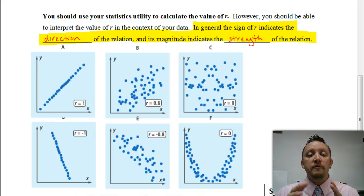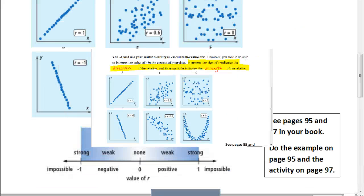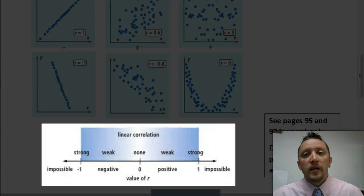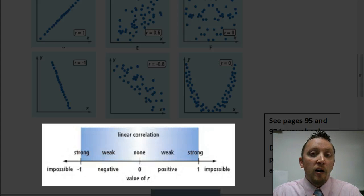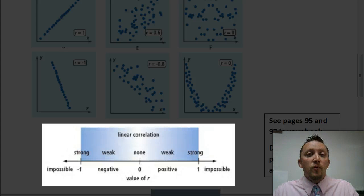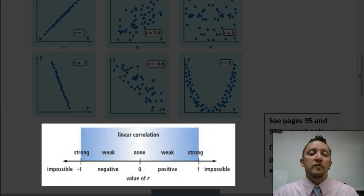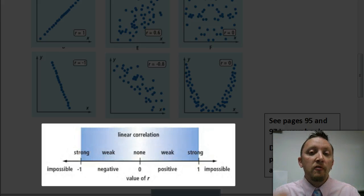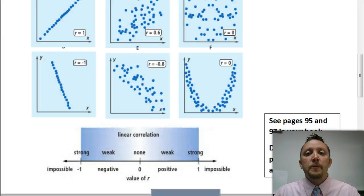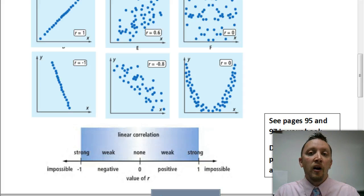Let's look at a visual aid that will help us identify the relationships. You can see that if you have a value of r that's 0 right in the middle, there is no relationship. As you go away from that — whether to the left or to the right — it becomes a positive or negative relationship, meaning the graph increases or decreases from left to right. The closer you get to 1, the stronger the relationship. Notice that outside the 1's it says 'impossible' — you'll never have a value for r greater than 1. It's got to be between negative 1 and 1.